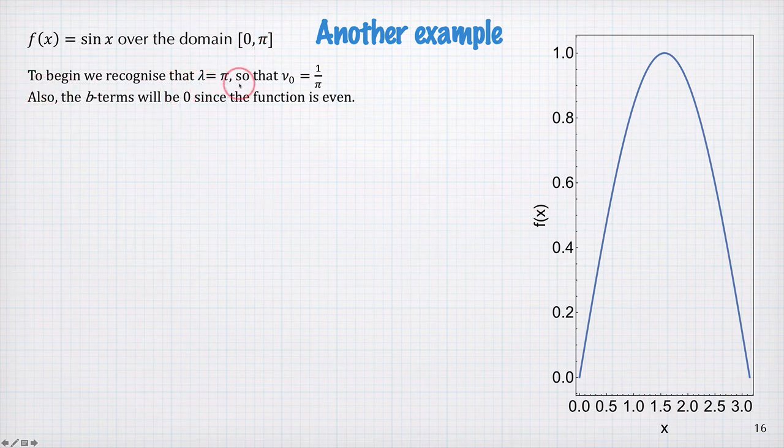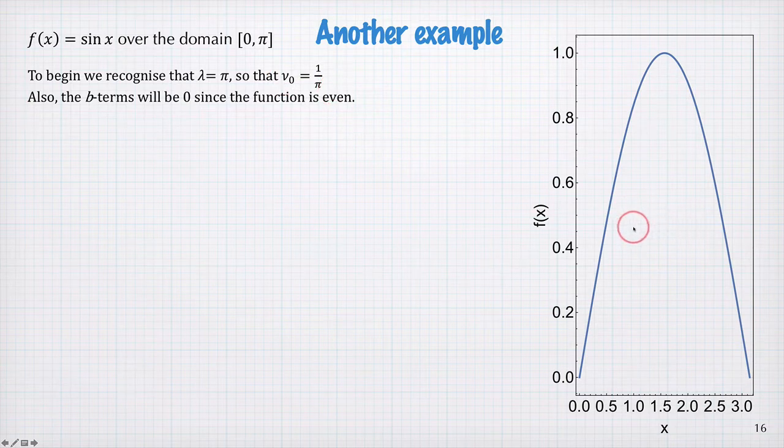First we recognize that the period is π and the frequency ν₀ is 1 over π. Looking at the function, we can see that the average is not 0, so there will be an offset in our Fourier series.